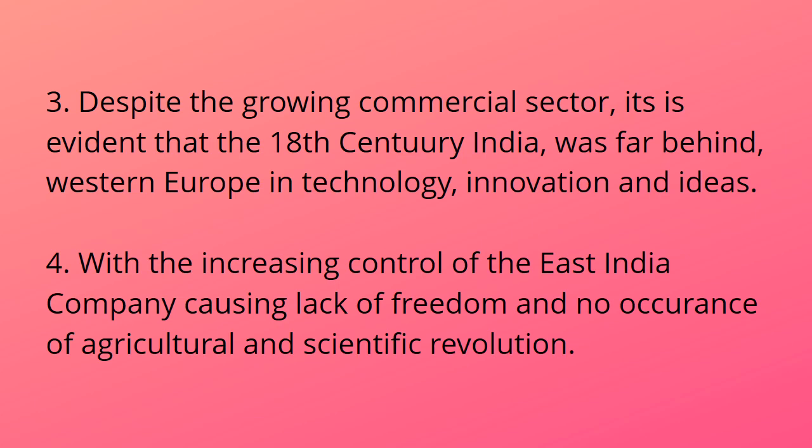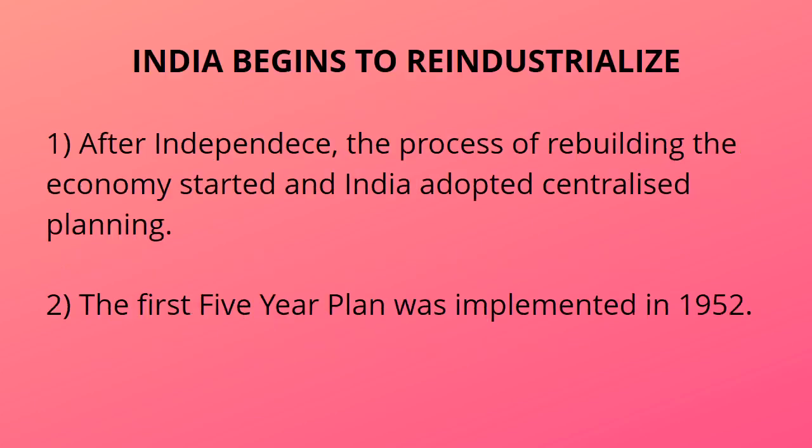With the increasing control of the East India Company causing lack of freedom, there was no occurrence of agricultural and scientific revolution. The East India Company was never in favor of giving freedom to Indians, and because of that, progress was restricted.